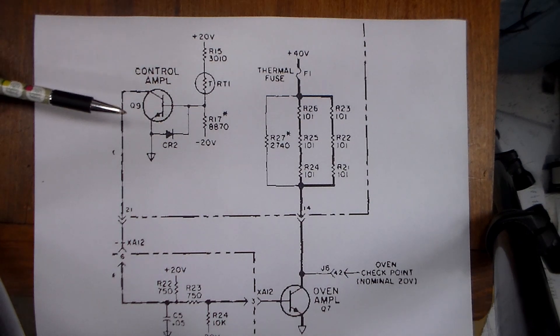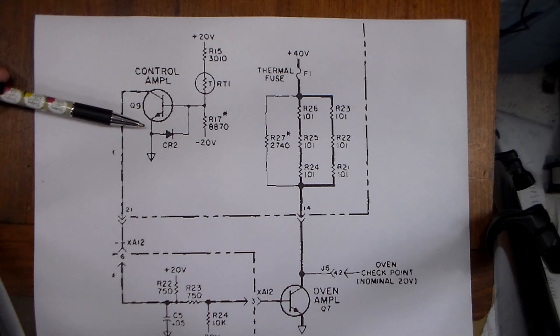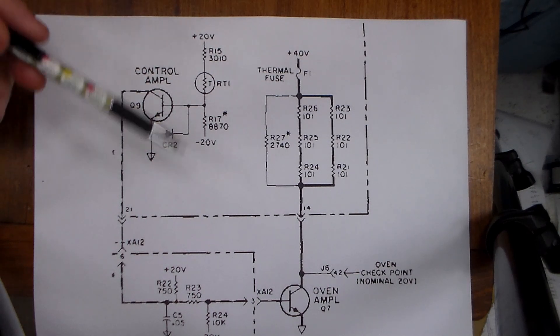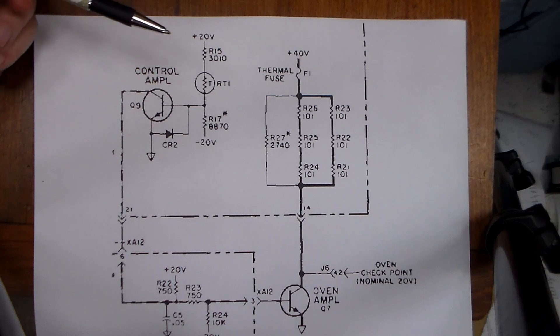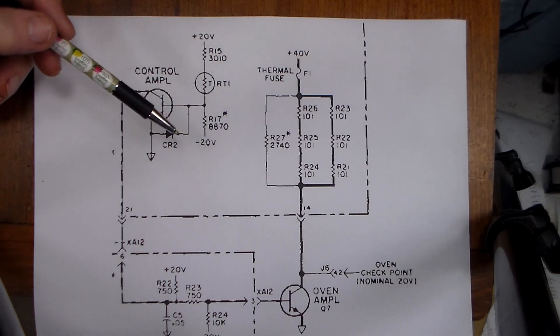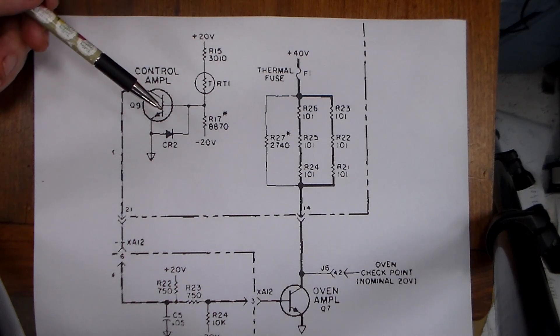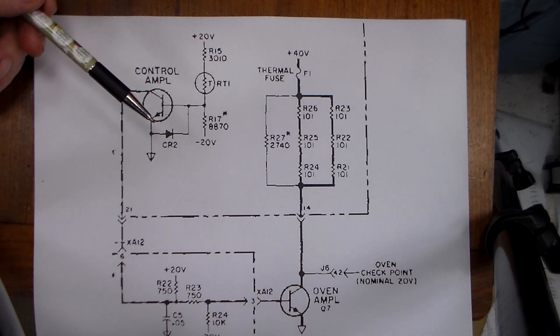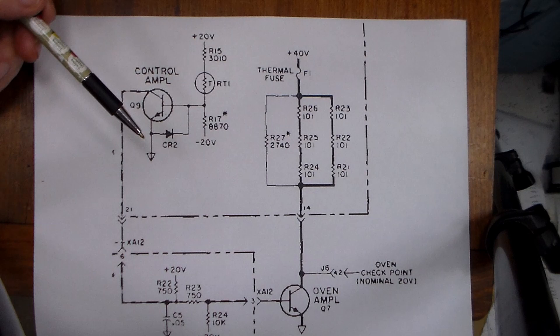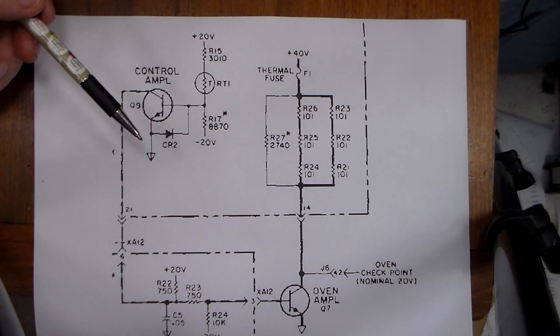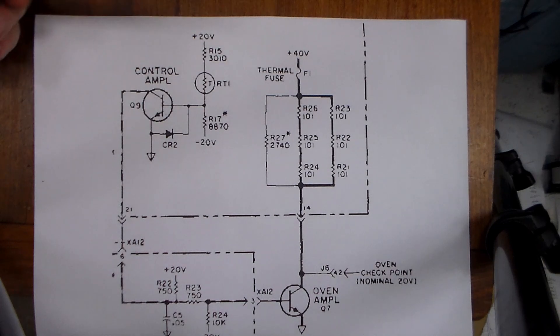After placing a new replacement 2N3417 in here and just let the system run, it actually stabilised at around about 85 degrees C which is a bit higher than what was set in the original circuit. HP had a nominal operating range of somewhere between 70 and 80 degrees C for the oven.